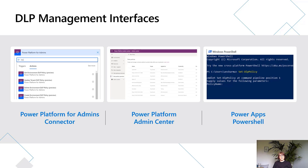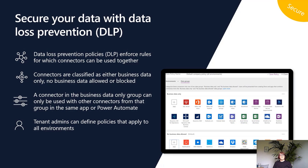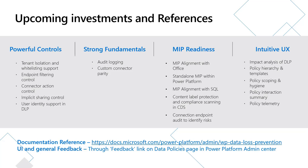In addition to the PPAC experience, you can also use PowerShell commandlets and Power Platform admin connectors to create and modify DLP policies. Data loss prevention policies are like recipes that enforce rules of which connectors can be used together, classified as business data only, no business data allowed, or blocked. We have a rich roadmap for DLP: making policies more granular through endpoint filtering and connector action control, adding custom connector parity with the UI and audit logging of DLP changes, aligning Power Platform DLP with Microsoft Information Protection by recognizing sensitivity labels, and improving user experience through impact analysis and interaction summaries of policies.